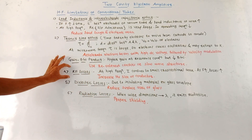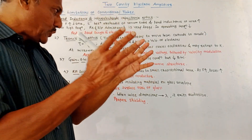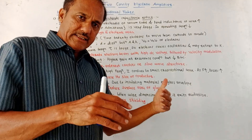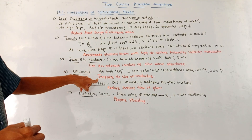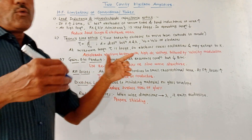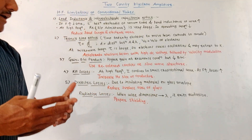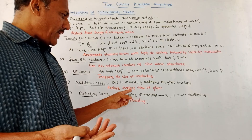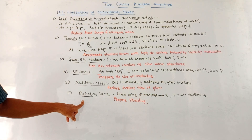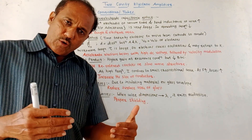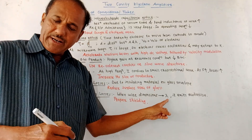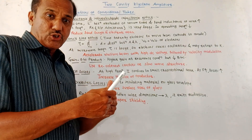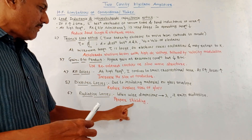Then RF losses — radio frequency losses. At higher frequencies, the current confines to a small cross-sectional area, so as the frequency increases, these RF losses also increase. To reduce these losses, increase the size of the conductor. Then dielectric losses — different kinds of insulating materials are used, usually glass envelopes, and because of these, dielectric losses take place. You can reduce such losses by reducing the surface area of the glass envelope. The last type of limitation is radiation losses. Whenever the dimension of a wire approaches lambda, the operating wavelength, it emits radiations, which is an unavoidable effect that reduces the efficiency of the microwave tube. These losses can be reduced by making use of proper shielding.